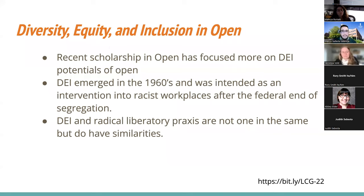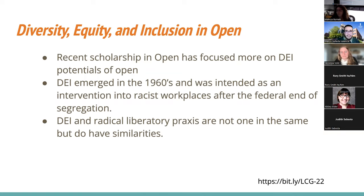In open scholarship right now, we have a lot of open praxis focused on what we might call DEI potentials — using open to achieve diversity, equity, and inclusion goals in institutional contexts. Something that's troubled me about this is that DEI is itself a corporatized concept. DEI emerged in the 1960s as an intervention into racist workplaces after the federal end of segregation. I would say DEI and radical liberatory praxis are not one and the same, but they do have similarities — you might think of them as being on a spectrum or one informing the other.